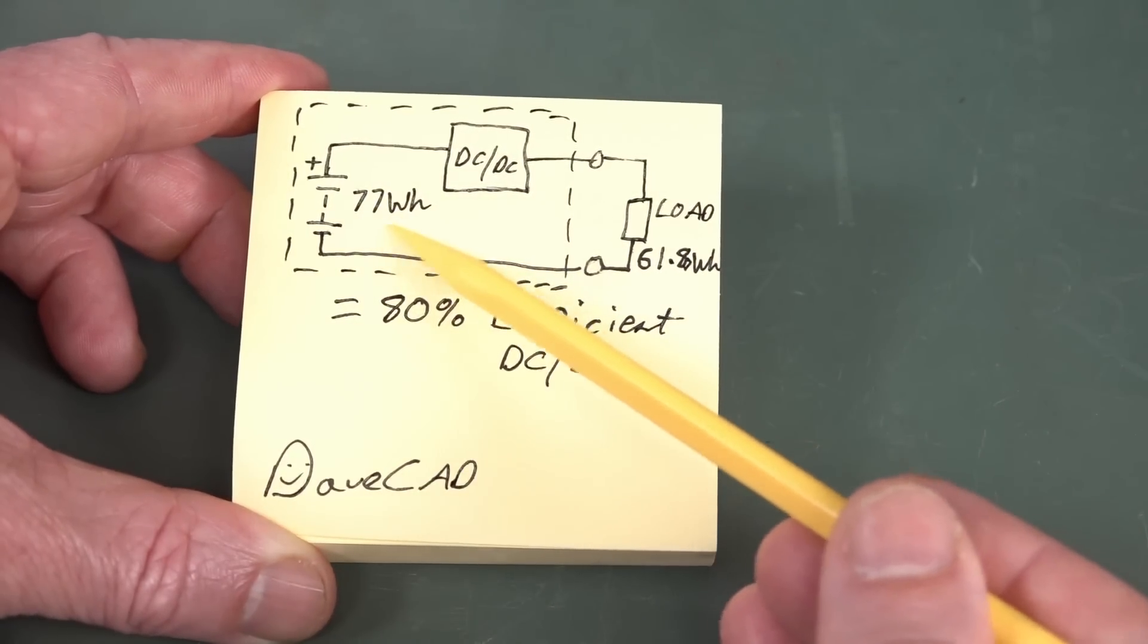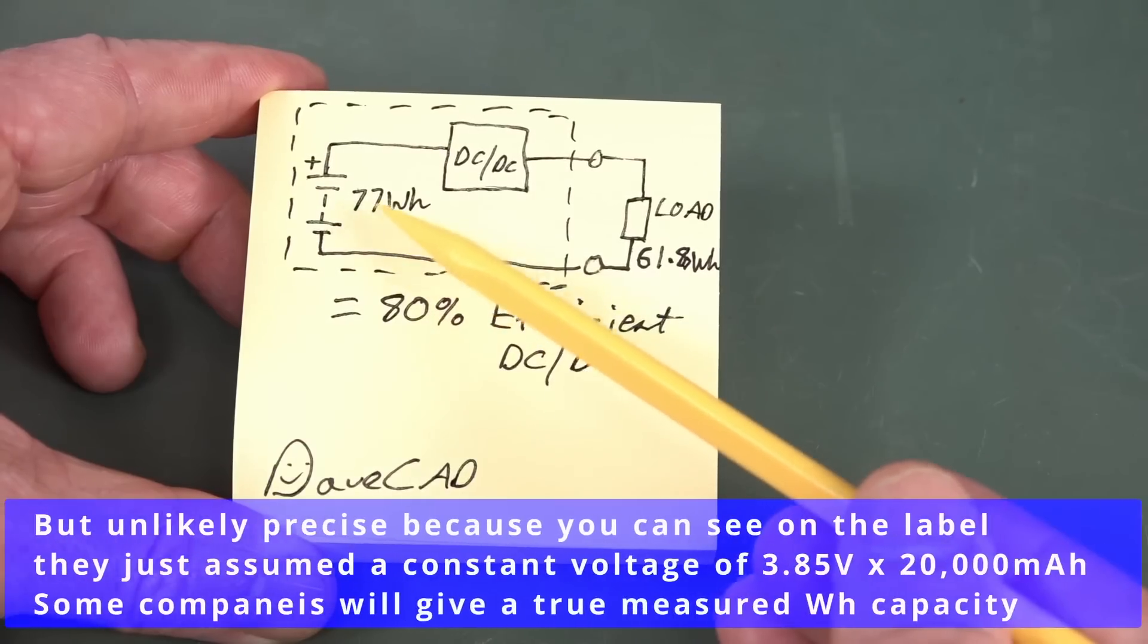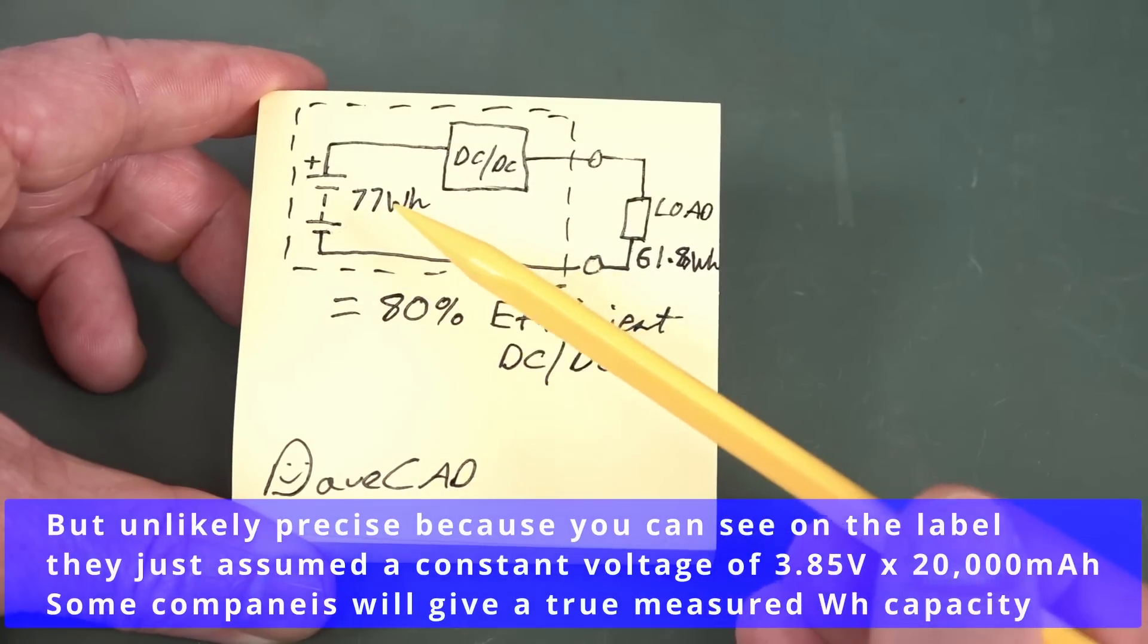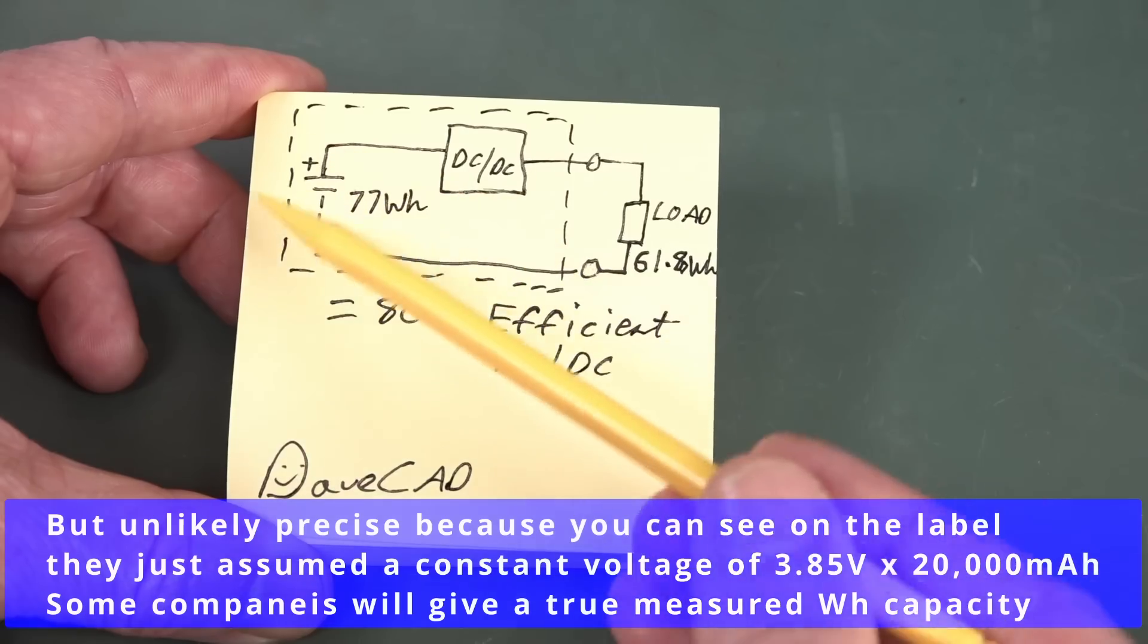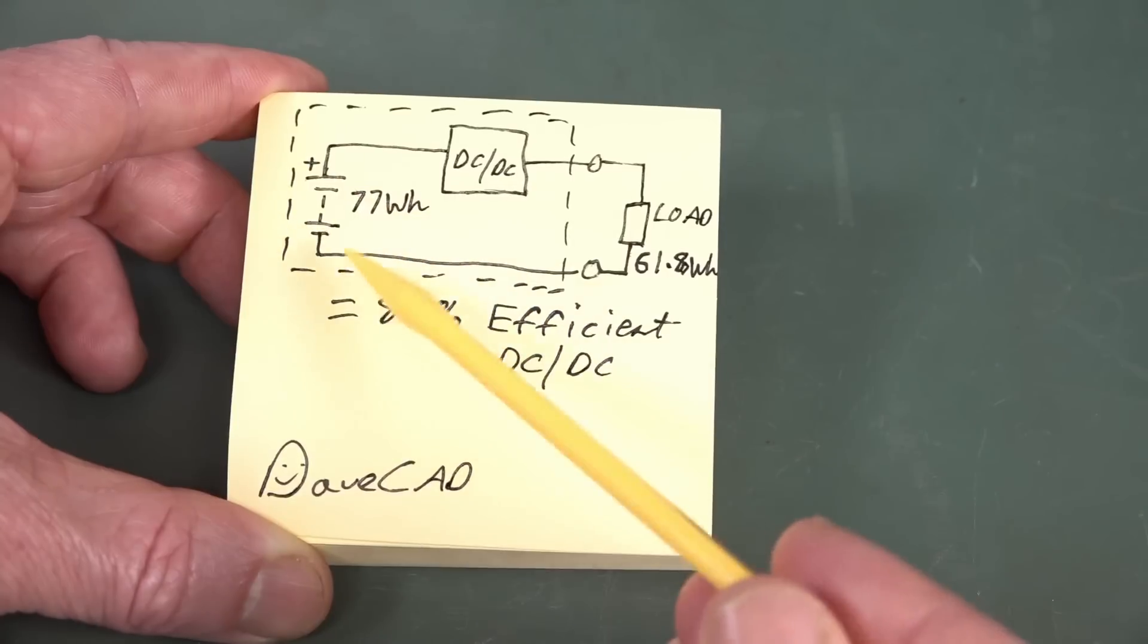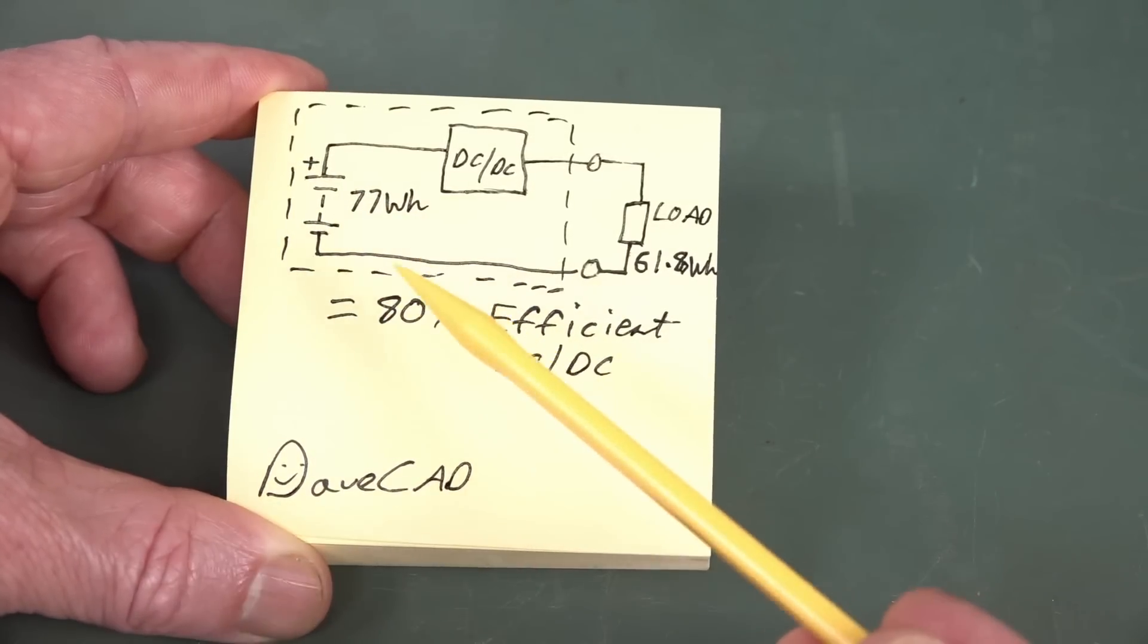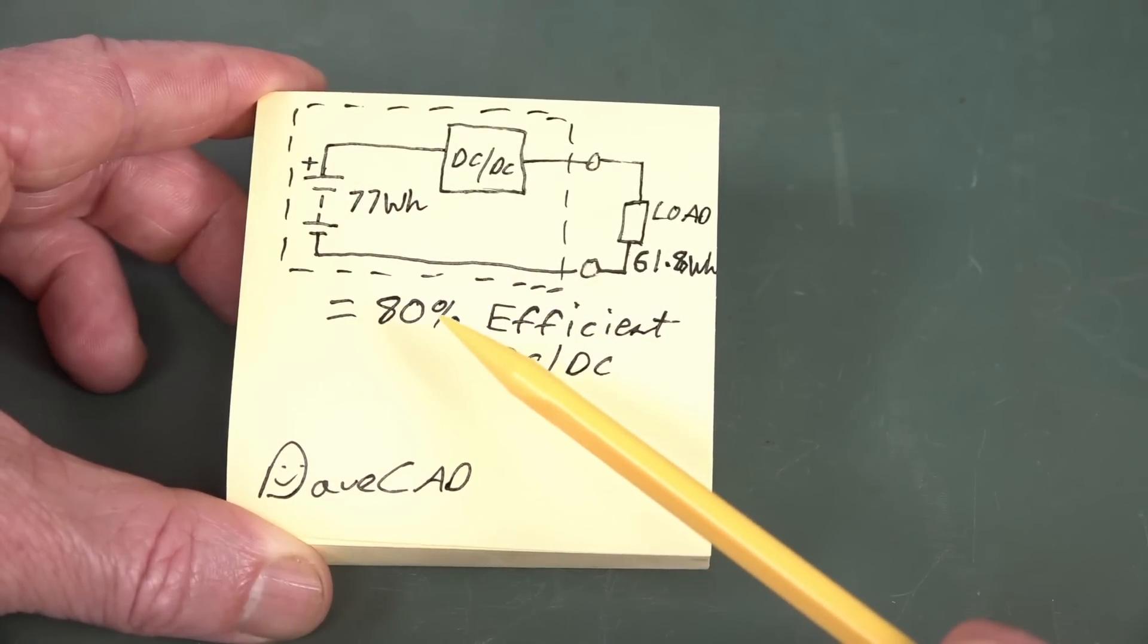Now, the battery inside may indeed have a watt-hour capacity of 77 watt-hours. So, it may actually meet that spec, but they don't tell you that this is what is called input-referred, because it's coming from the input, i.e. the battery. You can also call it battery-referred if you want to.